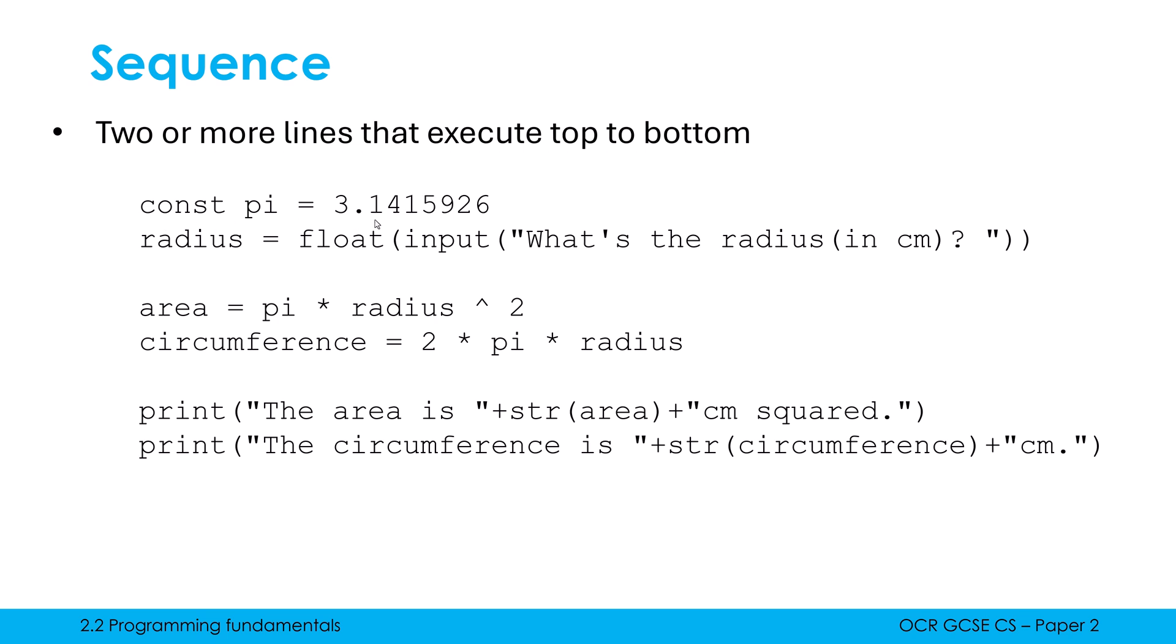The first line to run in this program here is const pi, where we are assigning pi as this value. Then radius equals this line runs, where we're asking for input, then we're calculating the area, then we're calculating the circumference, then we're printing the area, then we're printing the circumference. It always runs top to bottom, from line one all the way down to line eight. So this is our most basic building block, where I've got two or more lines which run back to back.